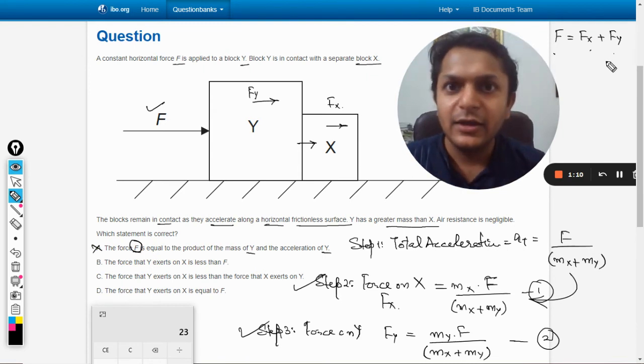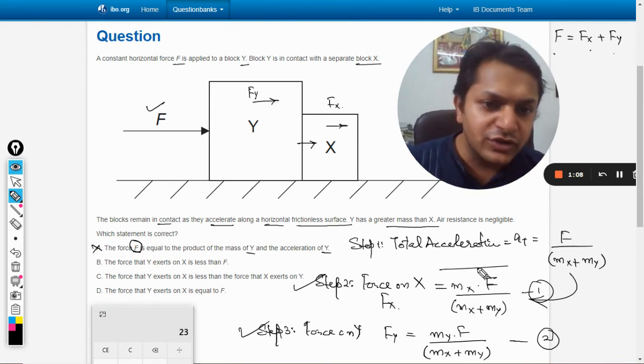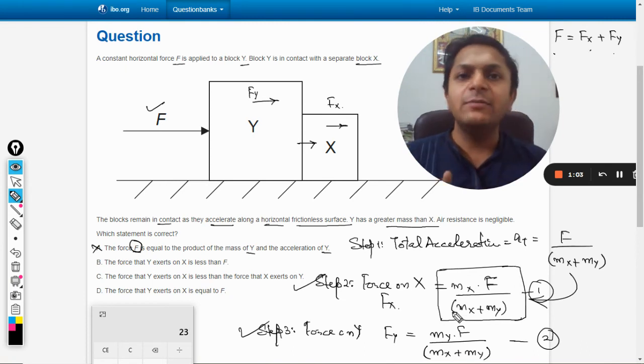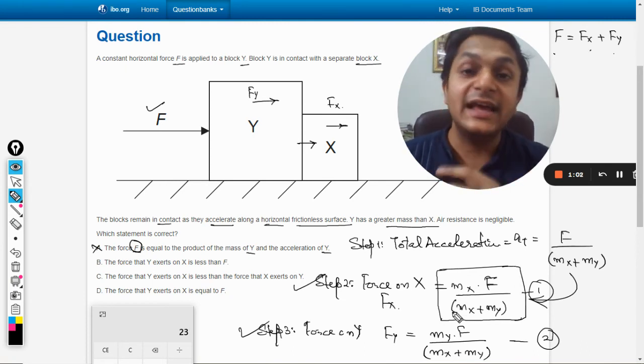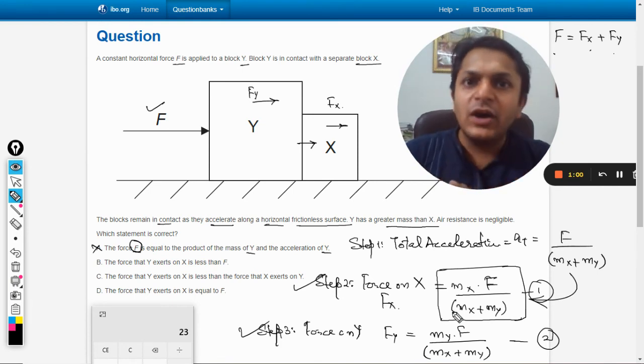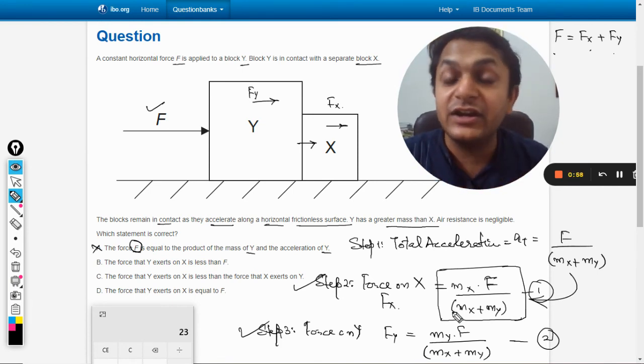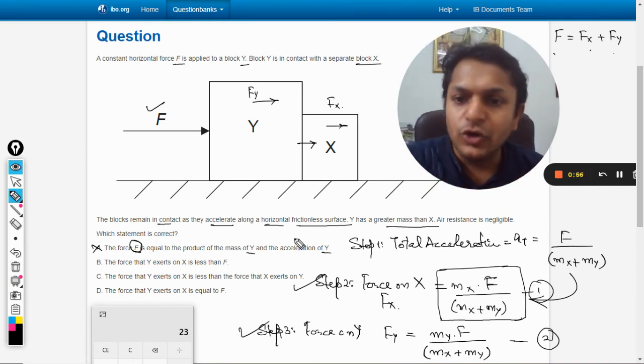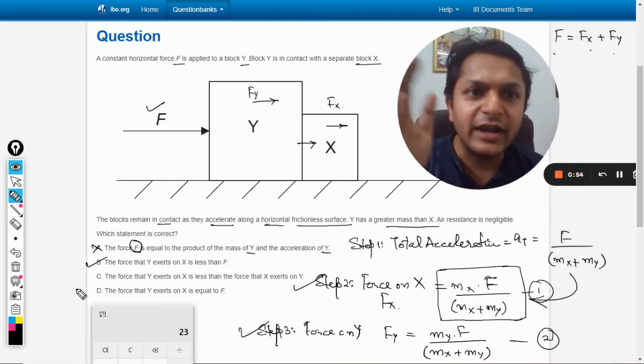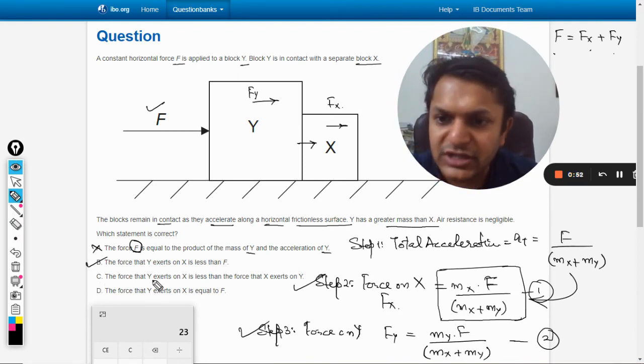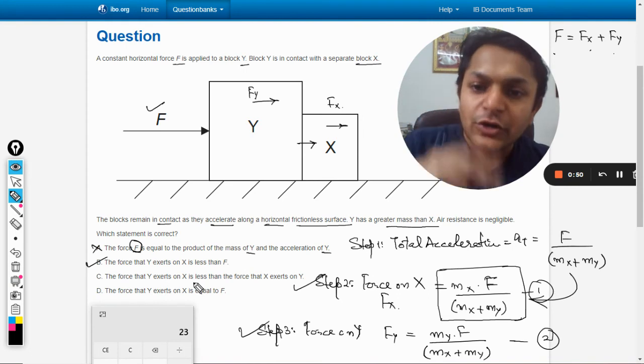And moreover if we concentrate at this ratio, you can see that m_x divided by (m_x + m_y) is lesser than one. So lesser than one multiply by F will definitely be lesser than F. So B option is absolutely correct. Option number C: the force that Y exerts on X is less than the force that X exerts on Y.